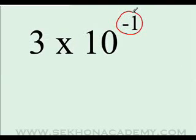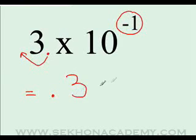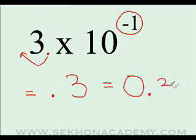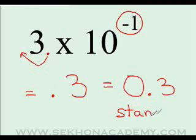Let's try one last example: three times 10 to the negative 1. When moving the decimal point once to the left, we get 0.3 or point 3. These two numbers are equal. Either one can be considered the standard form.